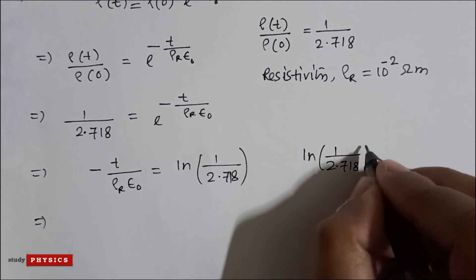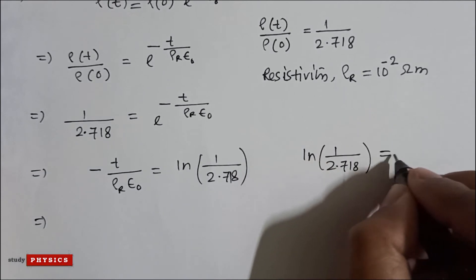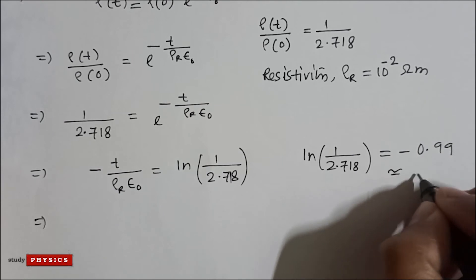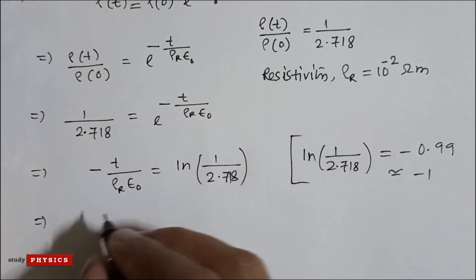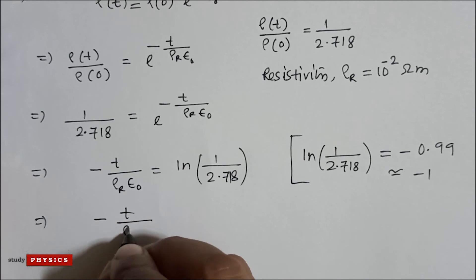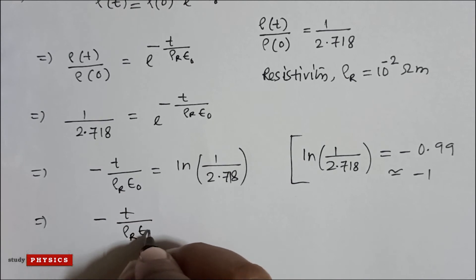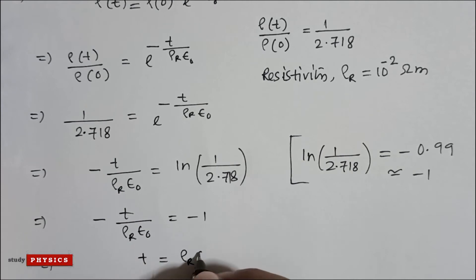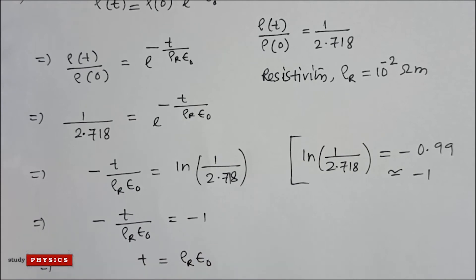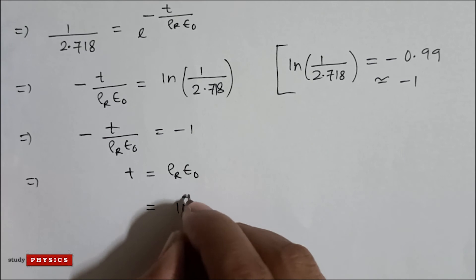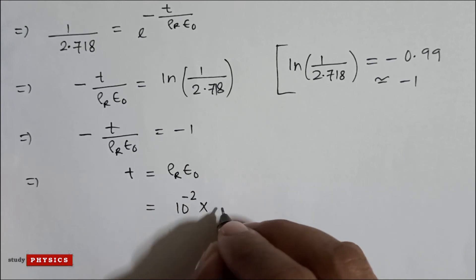Since 2.718 is approximately e, ln(1/2.718) is approximately minus 0.99, which is almost minus 1. So t divided by ρᵣε₀ equals minus 1, meaning t equals ρᵣε₀, which is 10 to the power minus 2.